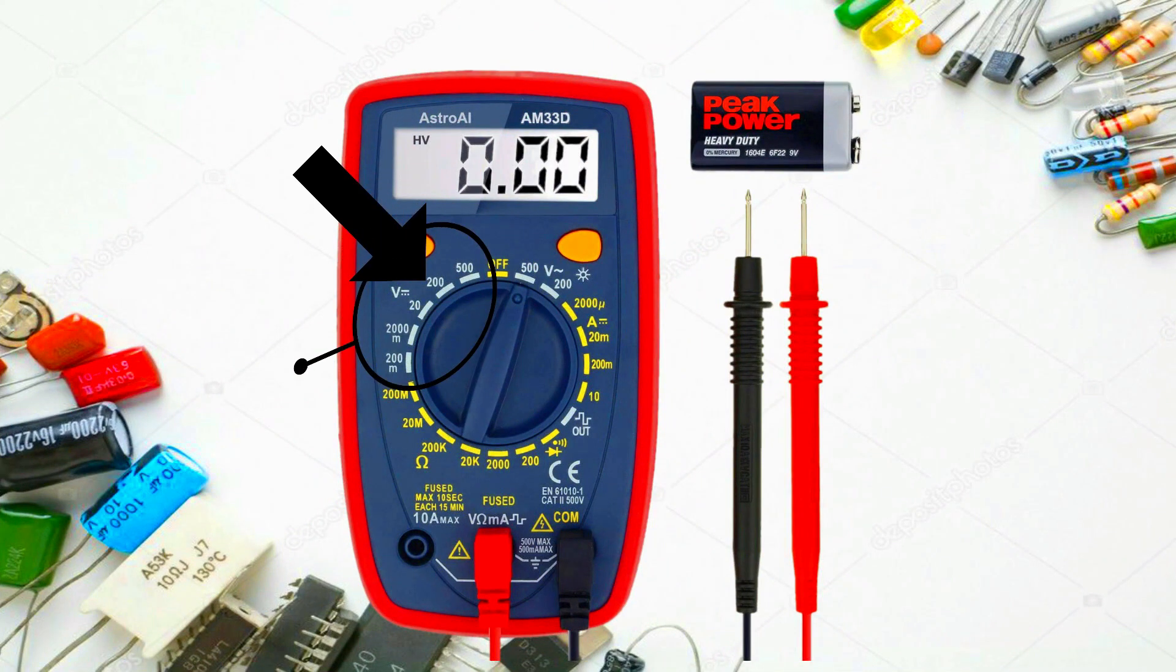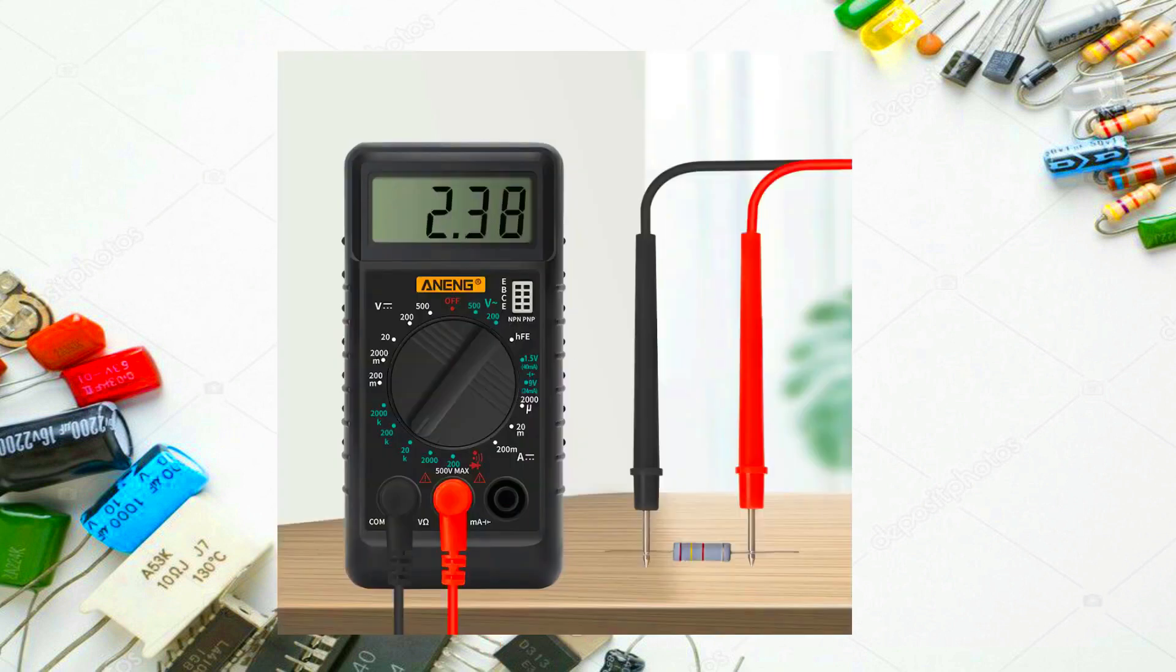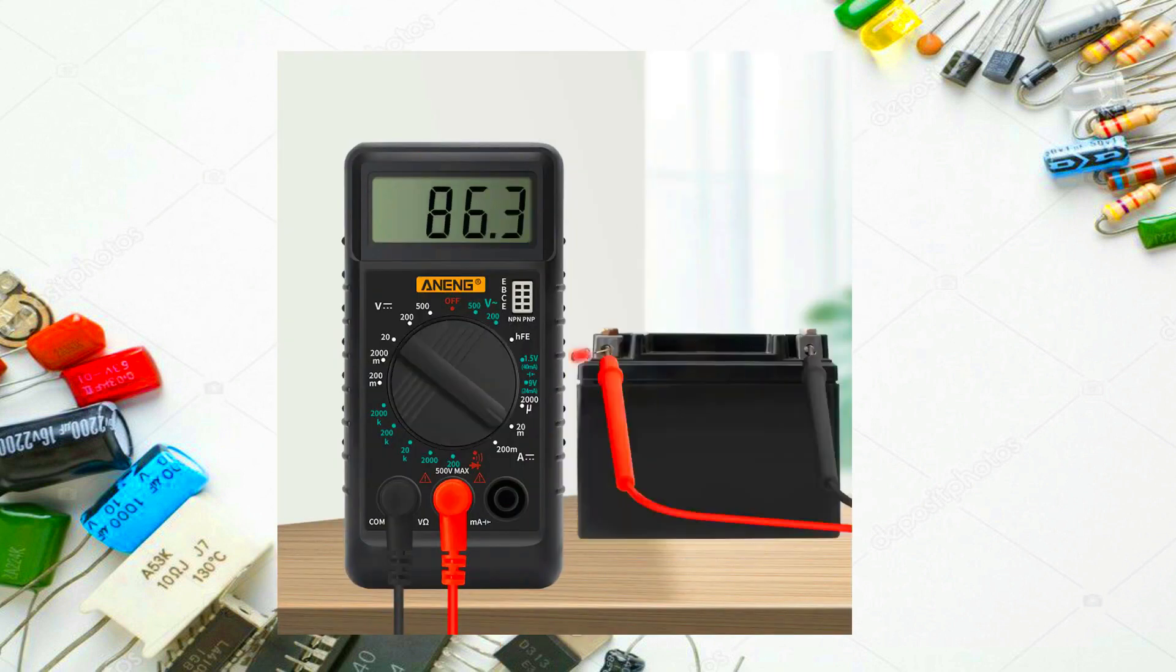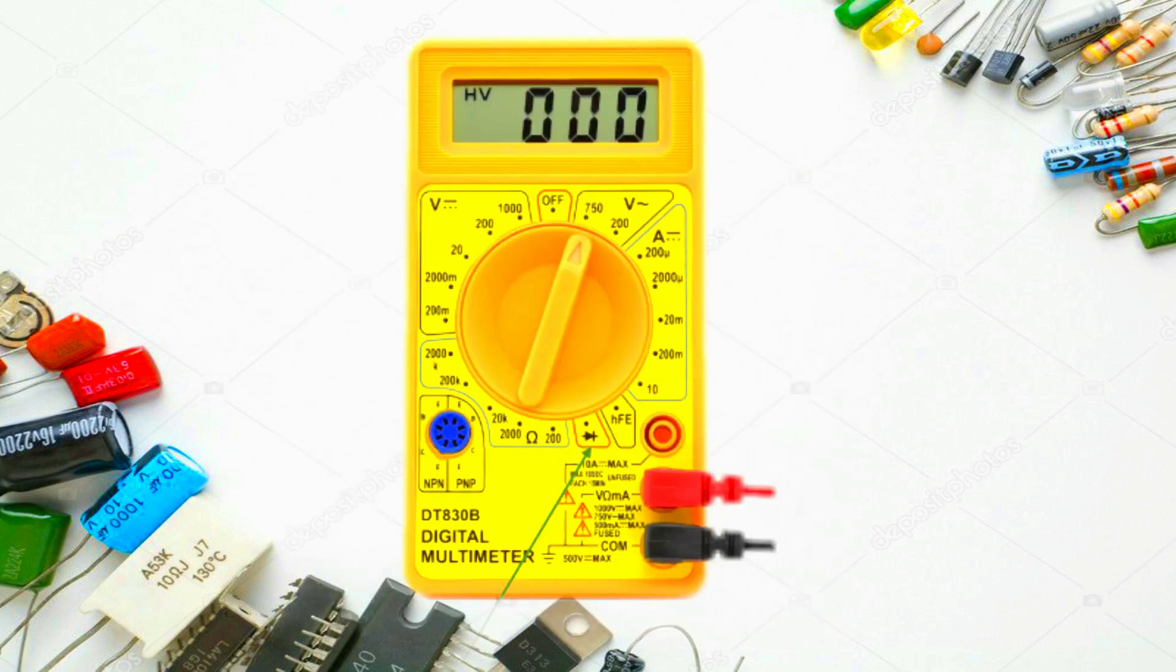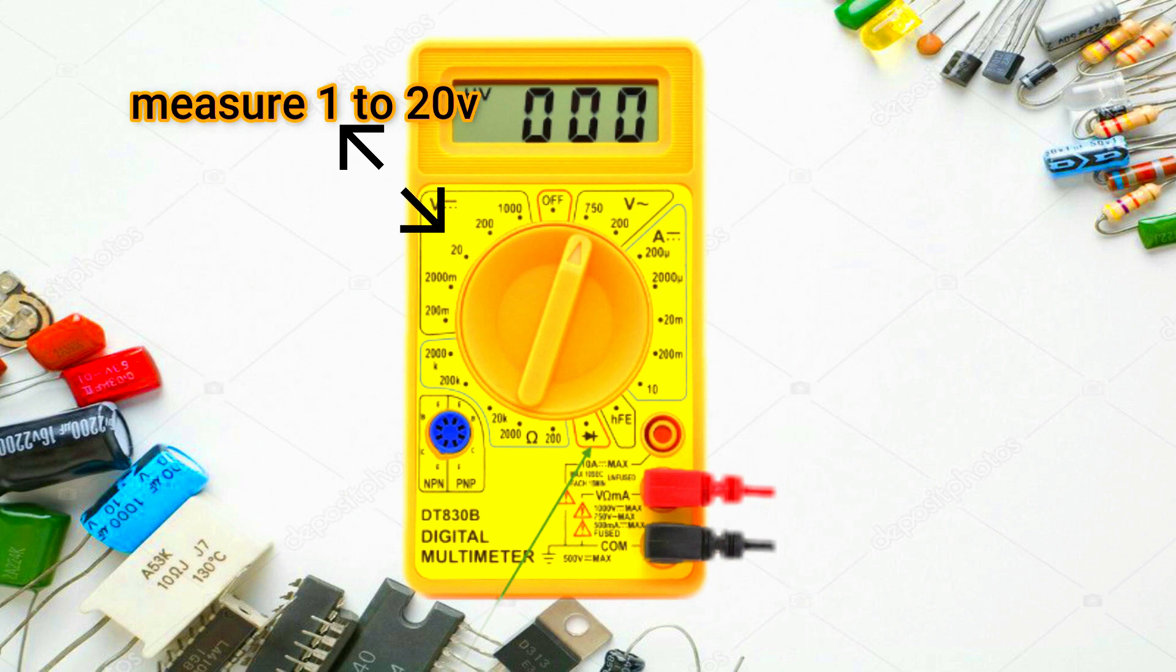The DC voltage range has a V with a straight line next to it. Multimeters are generally not auto-ranging. You have to set the multimeter to a range that it can measure. For example, 20 volts measures voltages up to 20 volts.